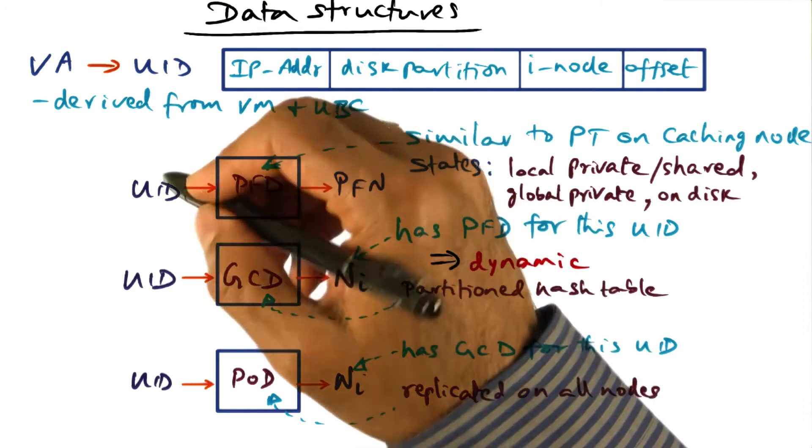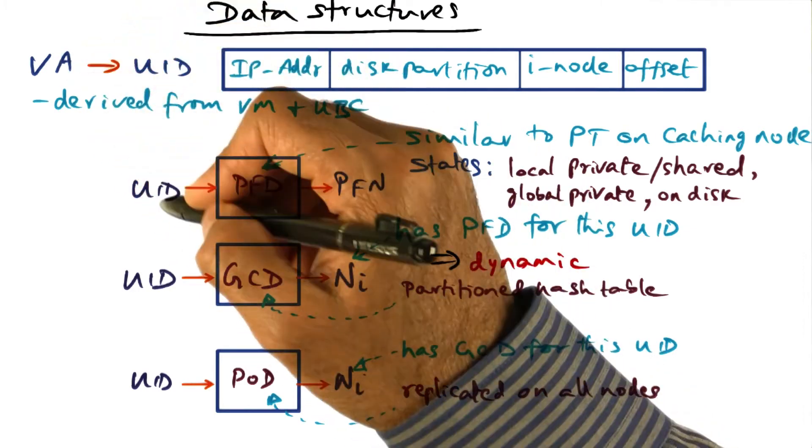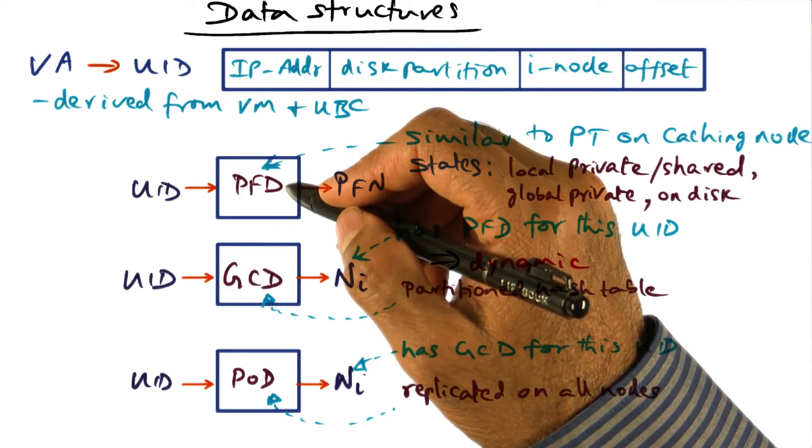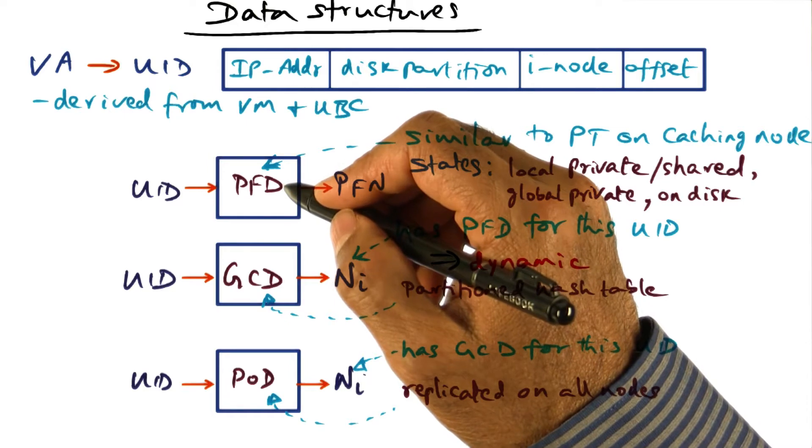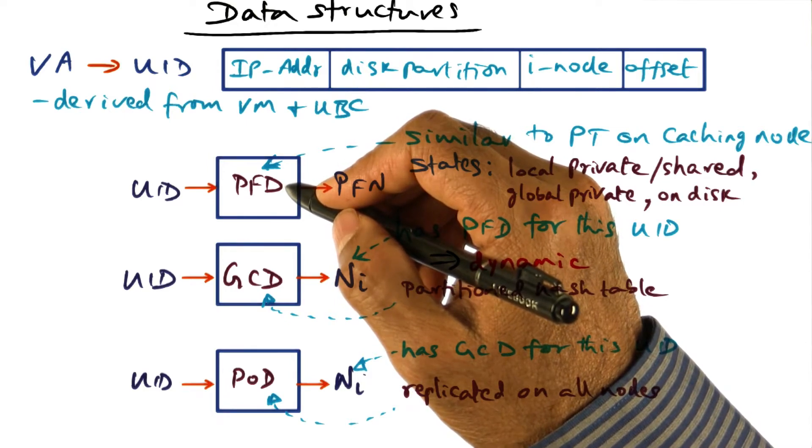So if I have a page fault, I convert my VA to UID. Then which PFD will I go and look up? I could broadcast it to everybody and say, hey, do you have it? That'll be very inefficient. We don't want to do that.